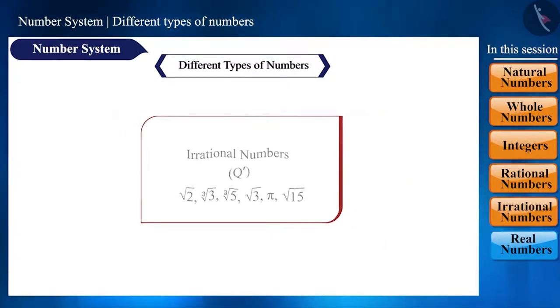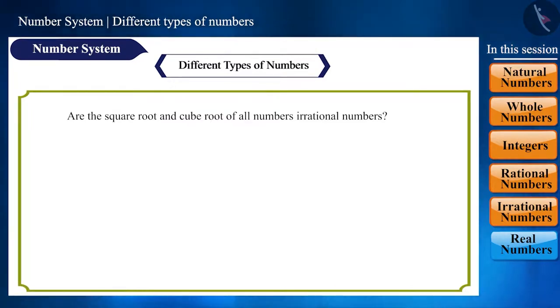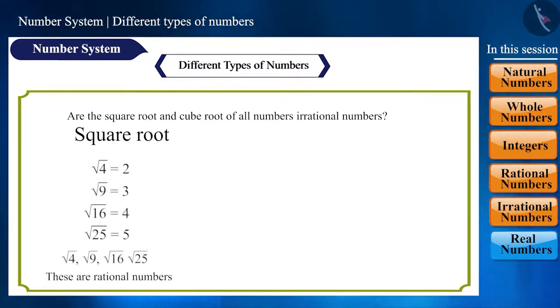Friends, are you thinking that the square root and cube root of all numbers are irrational numbers? No. Just like, root 4 which is 2. And 2 is a rational number. Therefore, root 4 is a rational number. In the same way, root 9, root 16, root 25 are rational numbers. And now speaking of cube root, cube root of 8 is 2 which is a rational number. Therefore, cube root of 8 is a rational number. Similarly, cube root of 27, cube root of 64 and cube root of 125 are rational numbers.